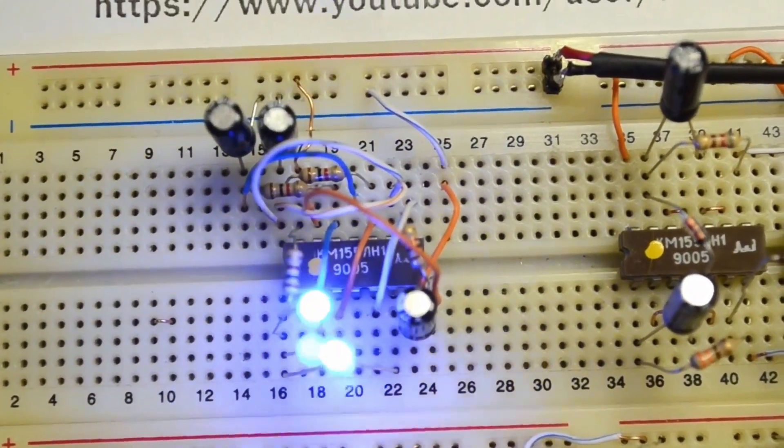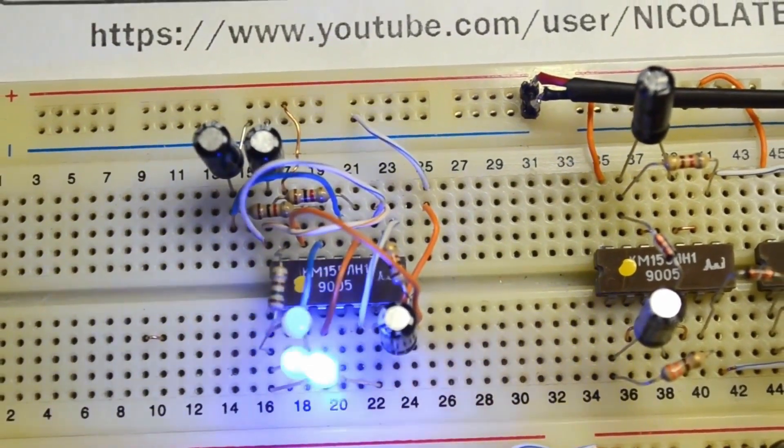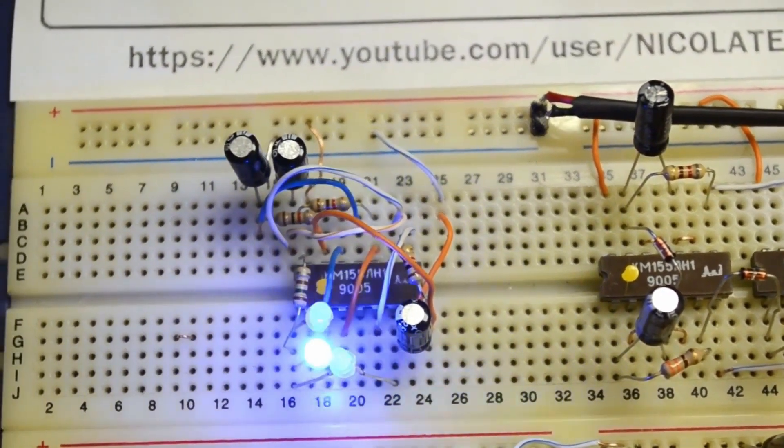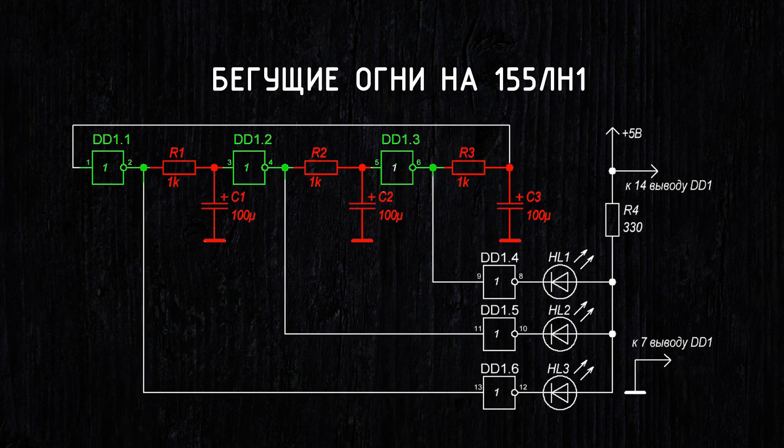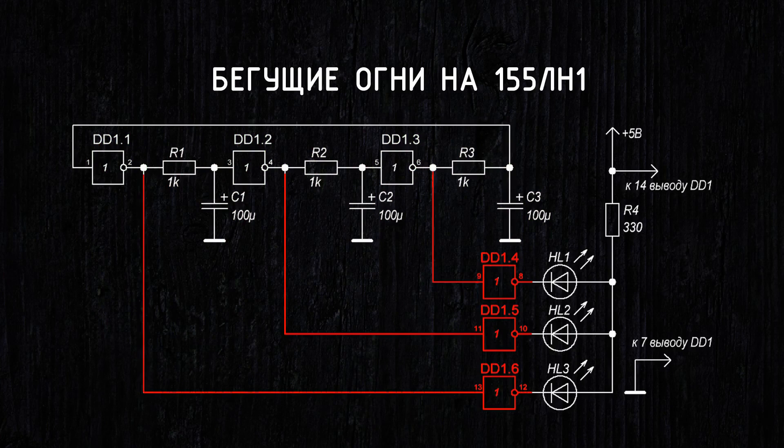The next circuit is a running light circuit. If you look closely at the circuit, you can see three NOT elements connected in series through RC chains to form a delay. The outputs of the elements are connected to buffer elements. Again, so that the subsequent part of the circuit does not affect the operation of the generator.